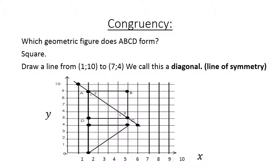Now draw a line from 1, 10 to 7 and 4, and we call this a diagonal, a line of symmetry.